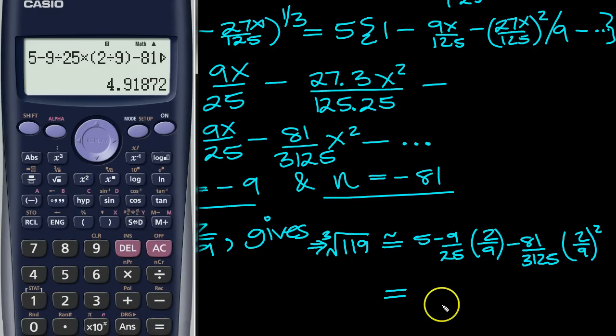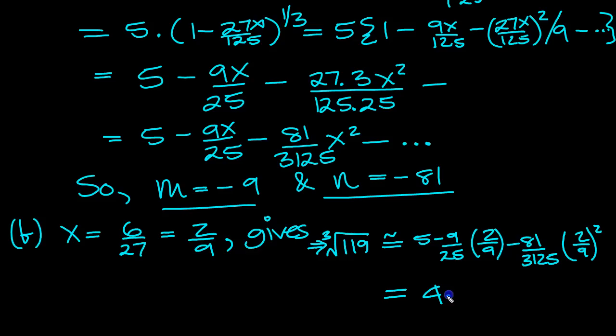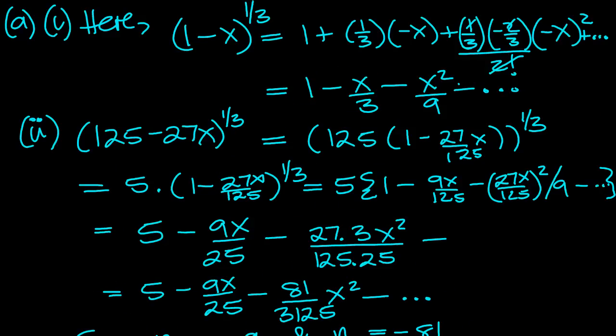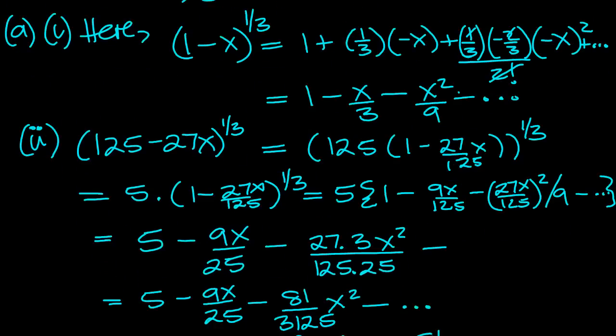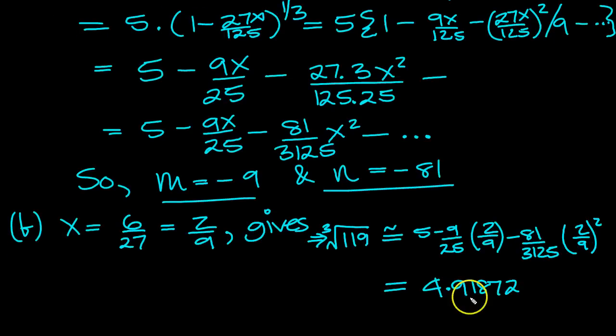Equals 4.91872. And what was the final part of the question? To 5DP. Well, that was it then, wasn't it? 4.91872.